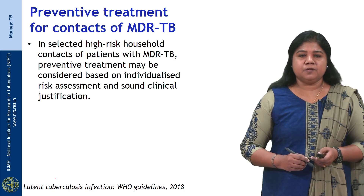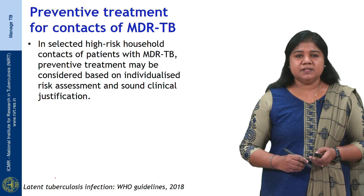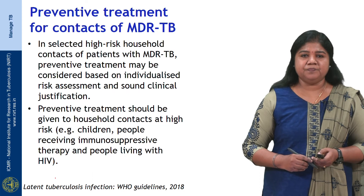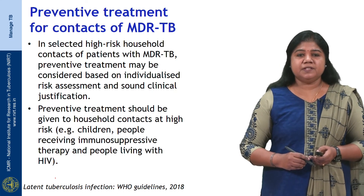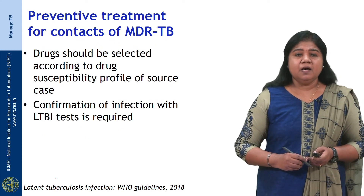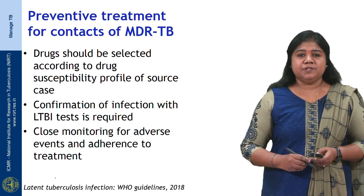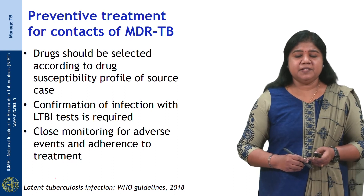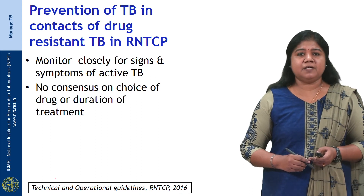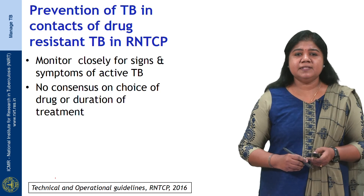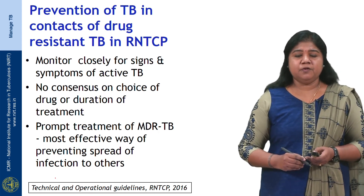For contacts of multi-drug-resistant tuberculosis: according to WHO guidelines, in selected high-risk household contacts of patients with MDR-TB, preventive treatment may be considered based on individualized risk assessment and sound clinical justification. Preventive treatment should be given to household contacts at high risk for TB, including children, people receiving immunosuppressive therapy, and people living with HIV. Drugs should be selected according to the drug susceptibility profile of the source case, and confirmation of infection with an LTBI test is required, with close monitoring for adverse events and adherence. The Revised National TB Control Programme, however, recommends closely monitoring for signs and symptoms of active TB among contacts of drug-resistant TB patients. There is no consensus yet on the choice of drug or duration of treatment. Prompt diagnosis and treatment of MDR-TB is the most effective way to prevent spread of infection to others.